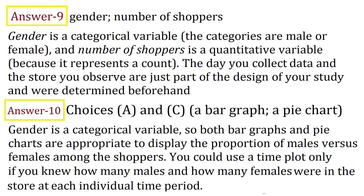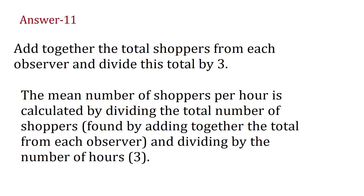Answer 10: Choices A and C — a bar graph and a pie chart. Gender is a categorical variable, so both bar graphs and pie charts are appropriate to display the proportion of males versus females among the shoppers. You could use a time plot only if you knew how many males and females were in the store at each individual time period. Answer 11: Add together the total shoppers from each observer and divide this total by three. The mean number of shoppers per hour is calculated by dividing the total number of shoppers by the number of hours, which is three.